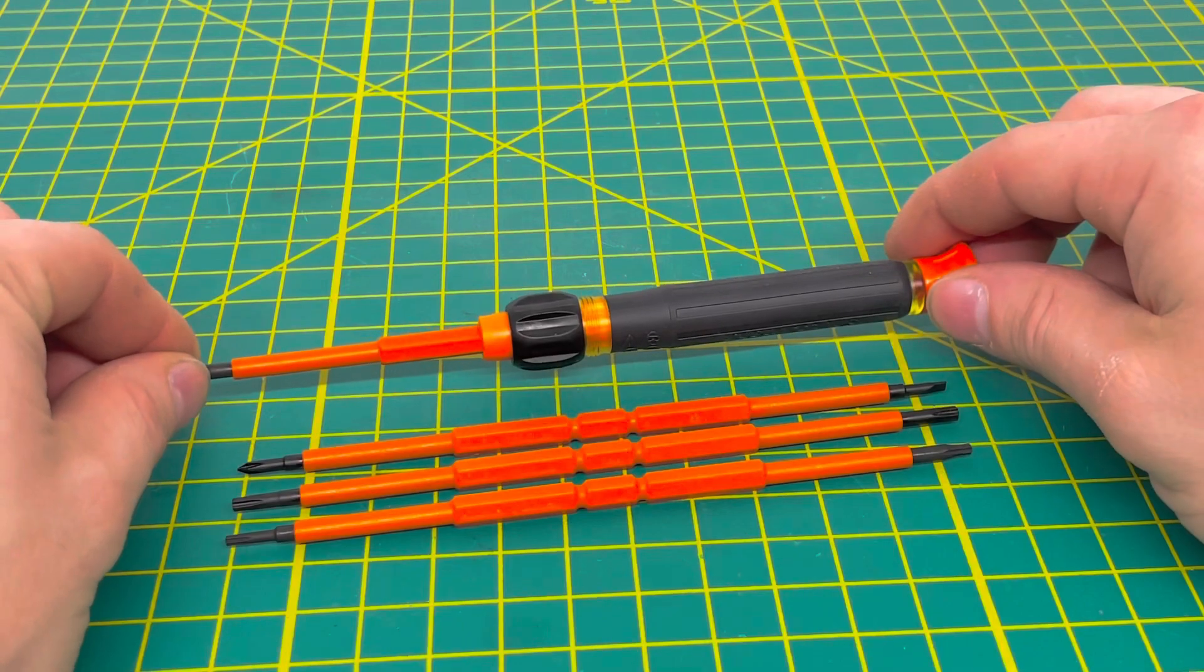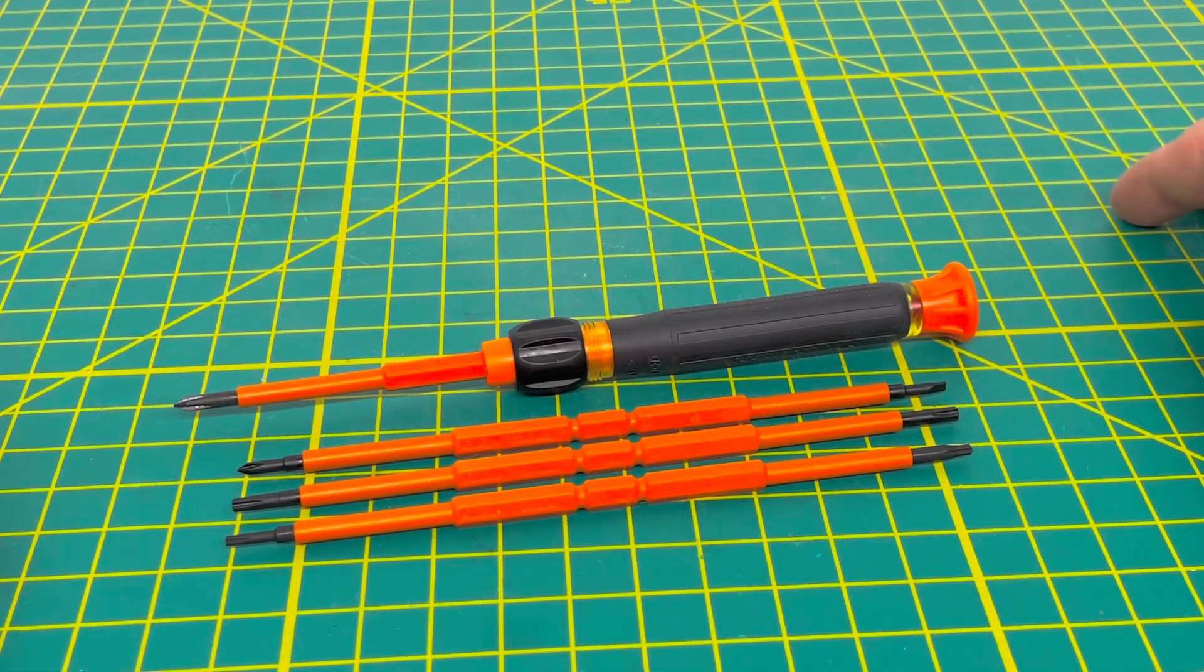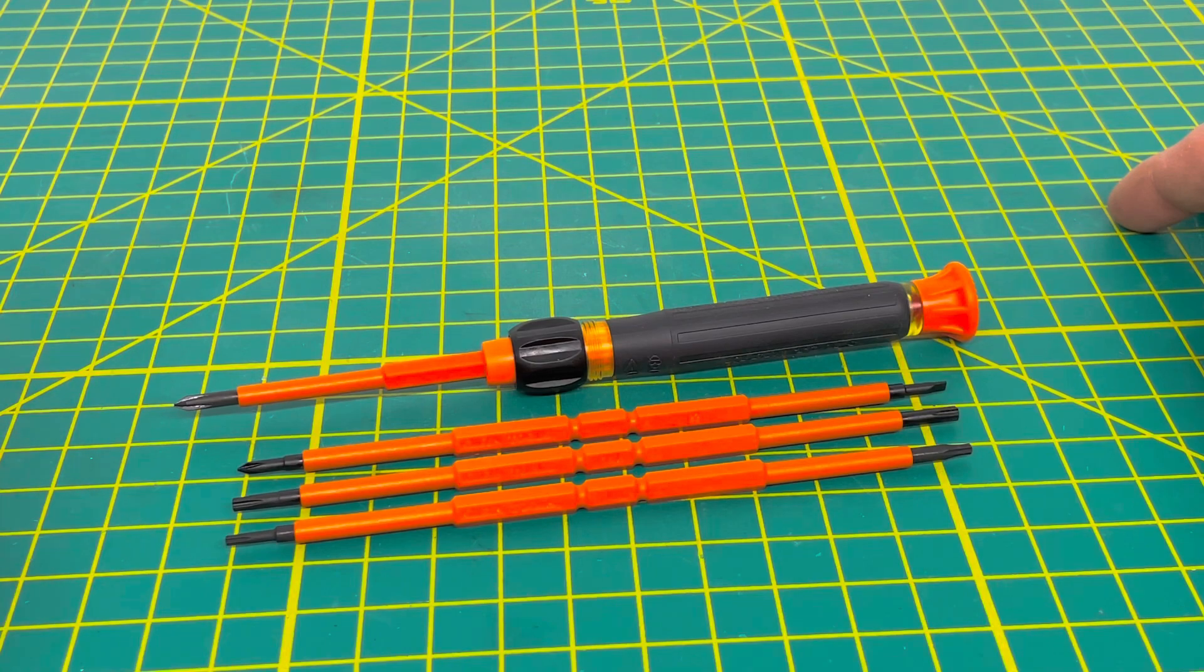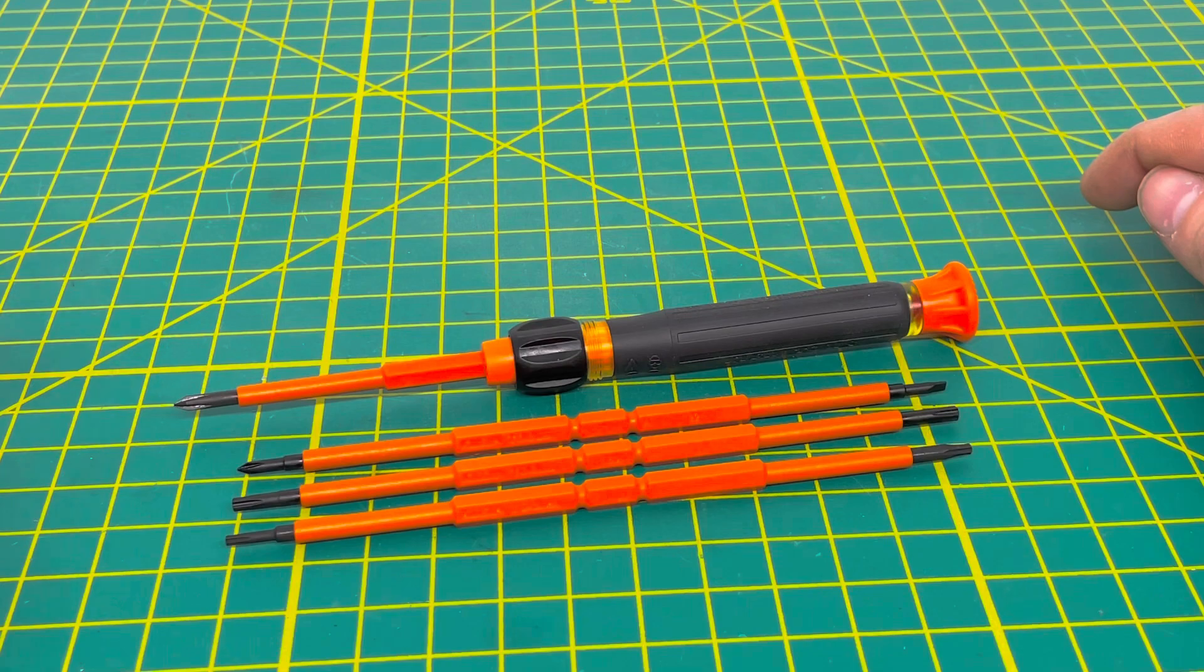This kit comes with eight different bits: a Phillips 00 and Phillips 0, a 3/32 slotted and 1/8 slotted, plus Torx bits including T7, T8, T10, and T15.